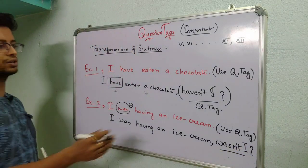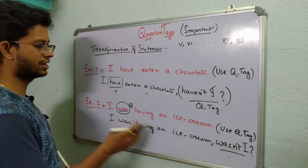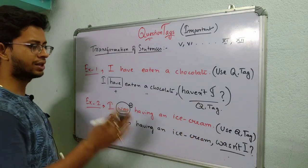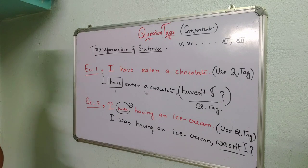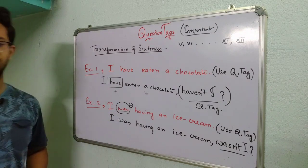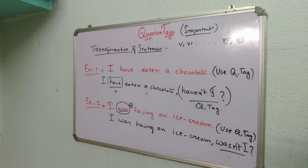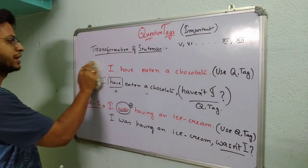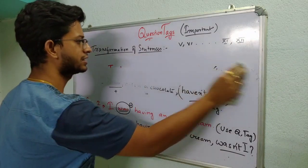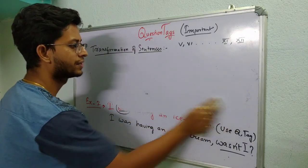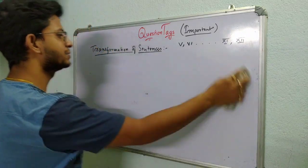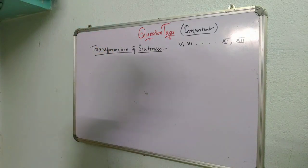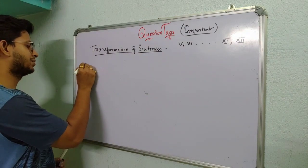So whenever you get question tag, if you get fill in the blanks, you have to do the same formula. If you are told to change into question tag, you have to do the same formula. So these are the two variations I have given. Let us see a few more examples so that you can understand the concept fully. It's very easy. Just if you understand the formula, then you can score full marks in this.